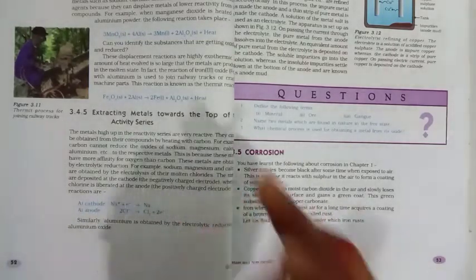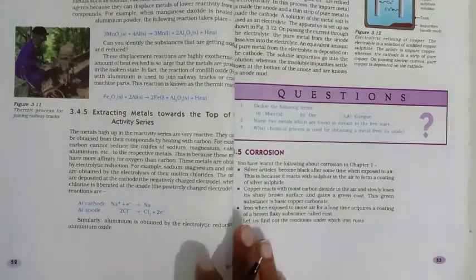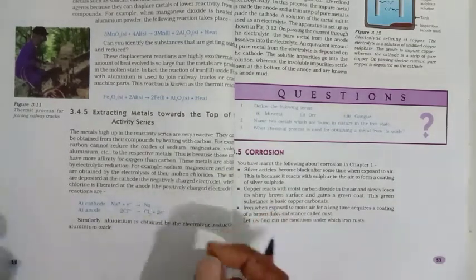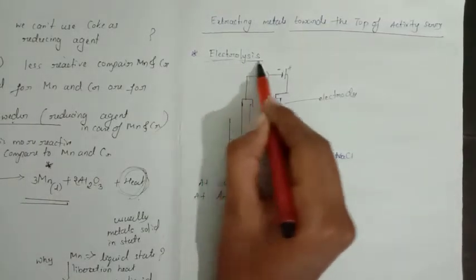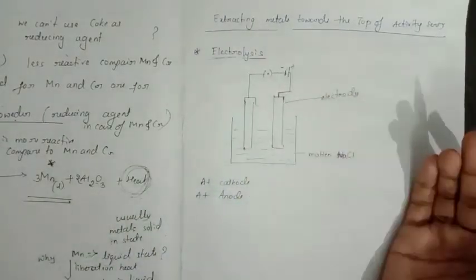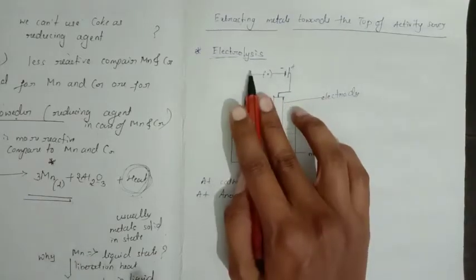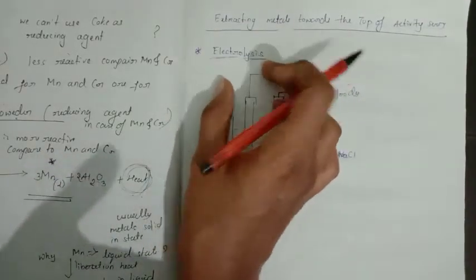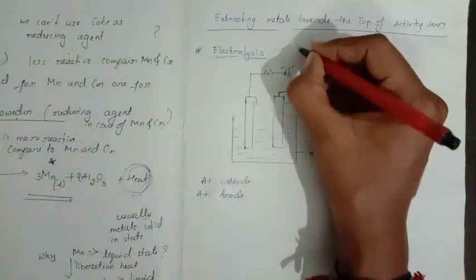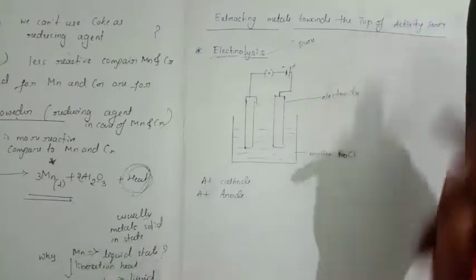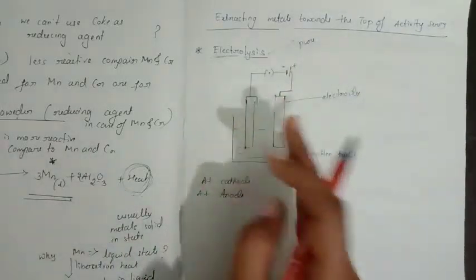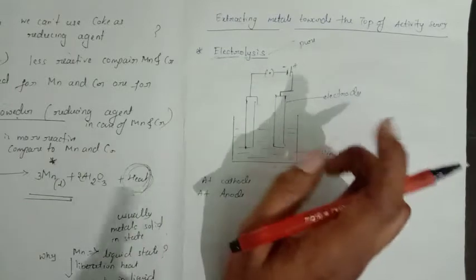To extract these highly reactive metals from their impurities, we follow the electrolysis process. Electrolysis is one important method by which we can obtain a pure metal. Even though these metals are highly reactive and have more impurities, we can remove those impurities and get a pure metal by using the electrolysis method.